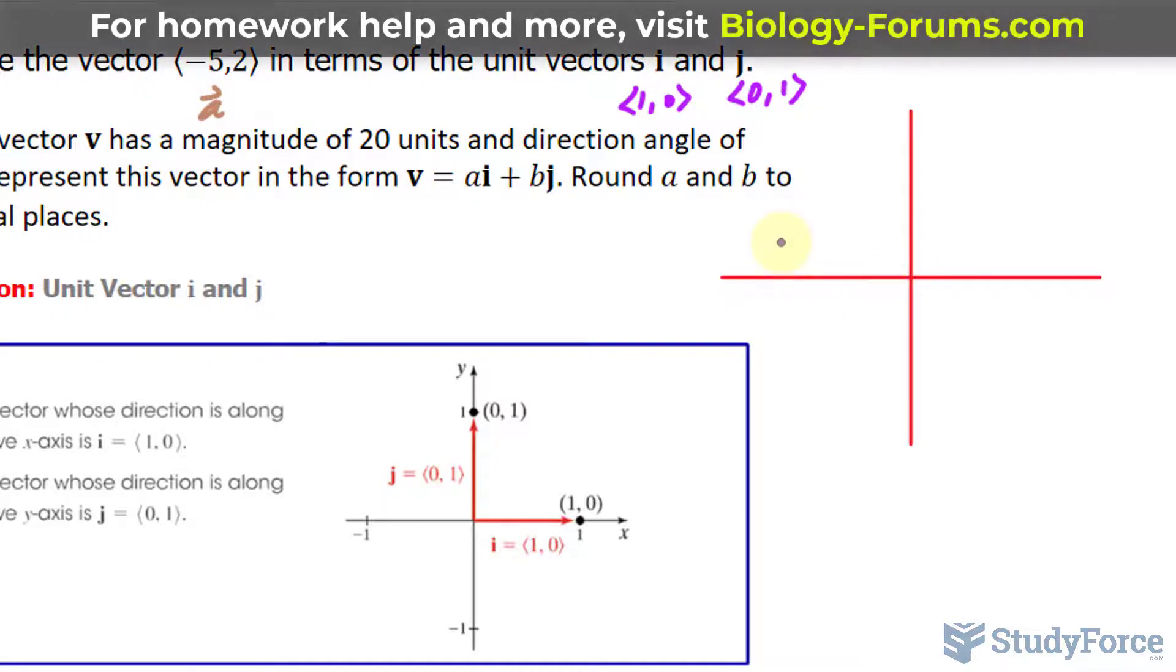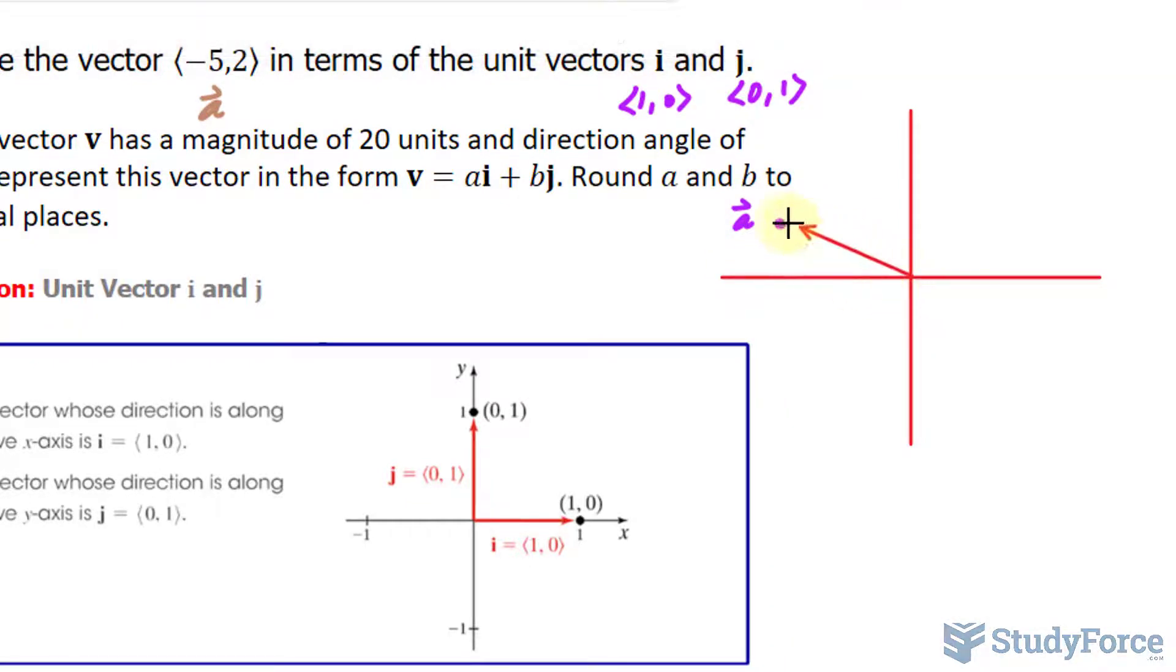So negative 5 this way and 2 upwards. I'll call this point my vector a, and I'll connect it to the origin like this.